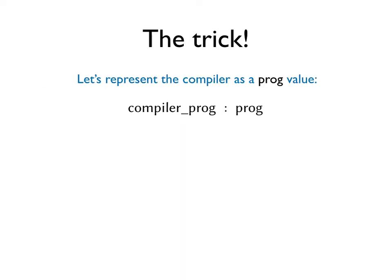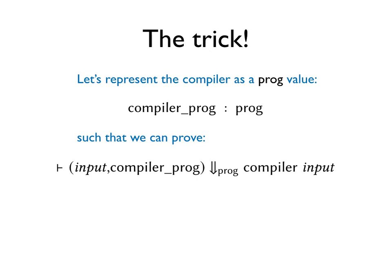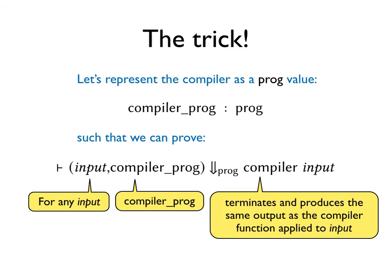So, how do we get around this? Well, there is a trick. Let's invent a prog representation of the compiler. This prog value, called compiler-prog, needs to be such that the following holds. For any input called input, compiler-prog will terminate and produce the same output as the compiler function applied to input. One should view this theorem as the correctness of compiler-prog. It relates compiler, the function, with compiler-prog.